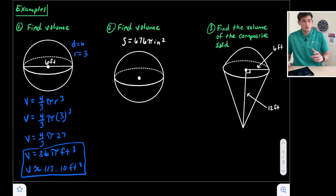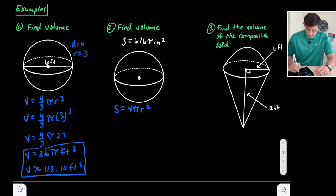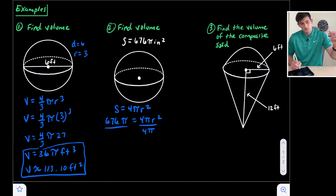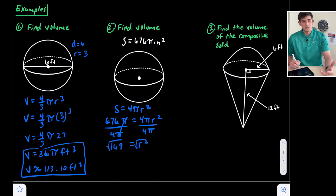For number two, we're going to find the volume, but we are given the surface area. We have to think about what our surface area equation for a sphere is — we know that surface area equals four pi r squared. Our surface area here is 676 pi, so we're going to set that equal to four pi r squared and solve for the radius. We divide by four pi — those pi's cancel — and we do 676 divided by four, which gives us 169 equals r squared. 169 is a perfect square, so we take the square root and get r equals 13.